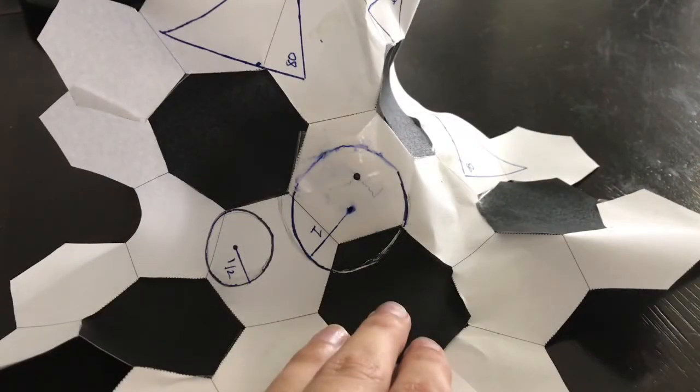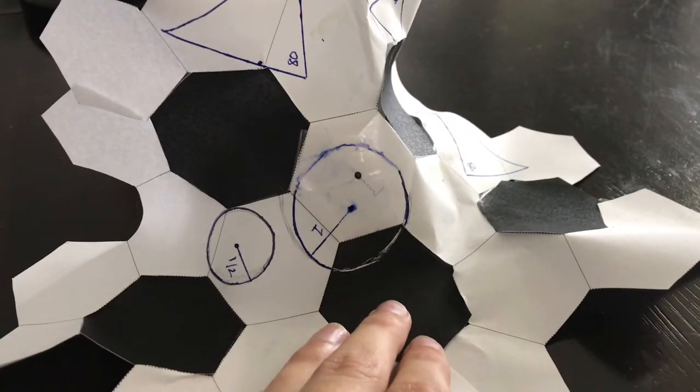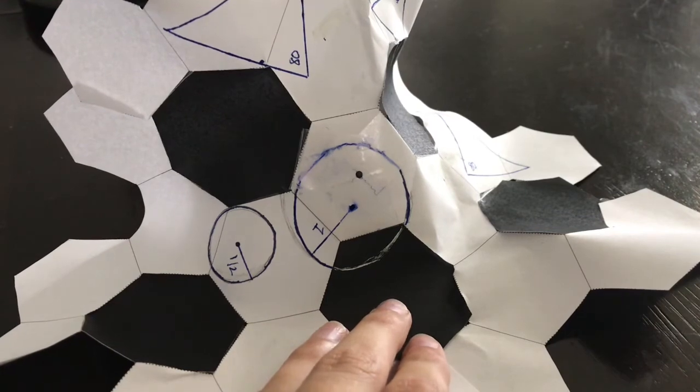For the last part of this project, we were asked to construct two circles with the same center, and one having twice the radius of the other. So here I have a circle with a radius of 1, and a circle with a radius of 1 half.